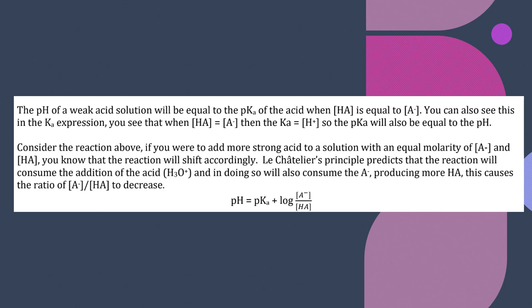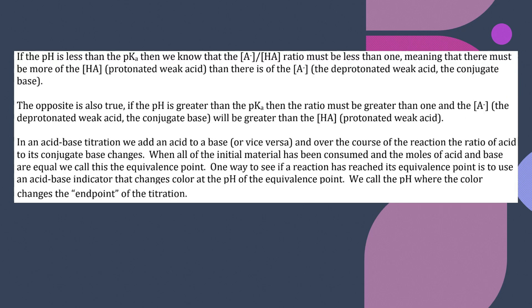If you were to add more strong acid to a solution with an equal molarity of A- and HA, the reaction will shift accordingly. Le Chatelier's principle predicts that the reaction will consume the addition of the acid and in doing so will consume the A-, producing more HA, and cause that ratio to change. If the pH is less than the pKa, then we know that ratio must be less than one — there must be more of the HA, the protonated weak acid, than there is of the conjugate base.